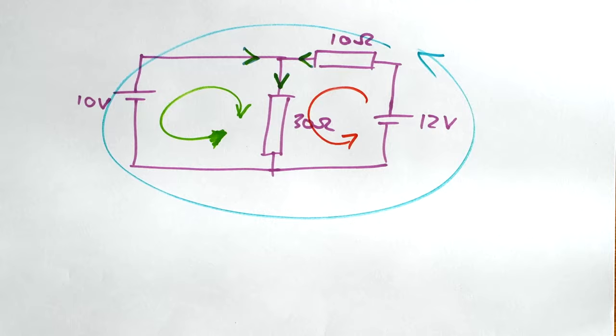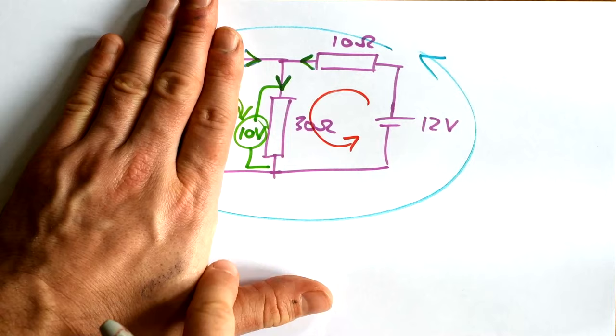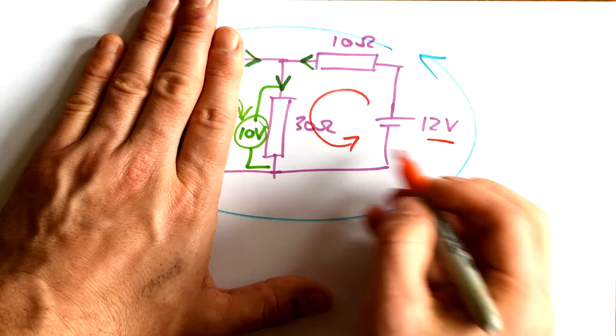Now we can look at the second loop here. We have a 12 volt EMF and we have our two resistances, but we know that it has to be a 10 volt drop across this 30 ohm resistor. Therefore, now using our knowledge that potential has to be divided across two resistors like this, we know therefore that this has to be 2 volts.